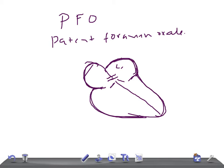It normally functionally closes when left atrial pressure increases. There is a flap, and increased pressure causes closure of this flap, ultimately closing as soon as the baby starts breathing. But in some children, the tissue of the foramen ovale is insufficient to cover it — either from insufficient growth or from being stretched due to increased pressure or volume.